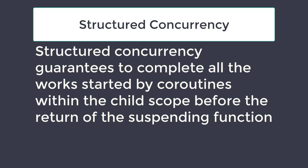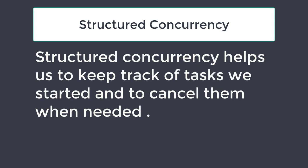There are other benefits of structured concurrency. When errors happen and exceptions are thrown, structured concurrency guarantees to notify the caller so we can handle exceptions easily. We can also use structured concurrency to cancel tasks — if we cancel the entire child scope, all work happening inside will be cancelled. We can also cancel coroutines separately.